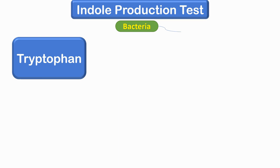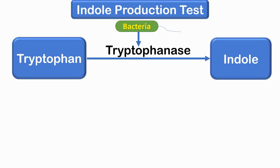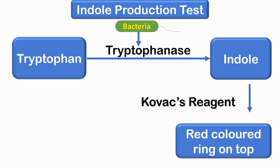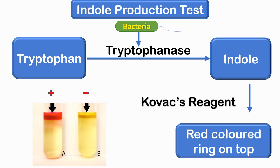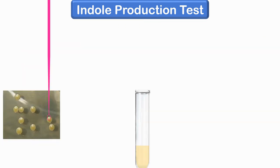Beginning with the IMViC tests, the first test is the indole production test. This detects the presence of tryptophanase enzyme in the bacteria. Tryptophanase utilizes tryptophan in the broth and produces indole in this process. Presence of indole can be detected by adding Kovac's reagent to the broth. Formation of a red-colored ring on the top of the broth is suggestive of indole production by a bacterium that produces tryptophanase enzyme.